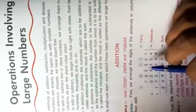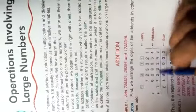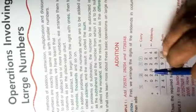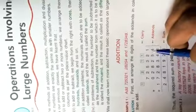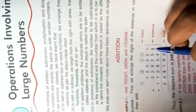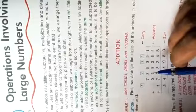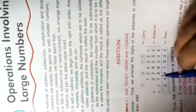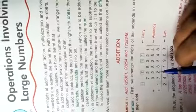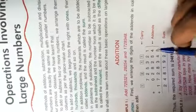725321 is the given number. The next number, write below after the first number: 28254. And the next number: 1728348. There are three numbers called addends.